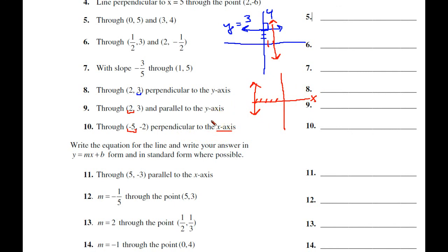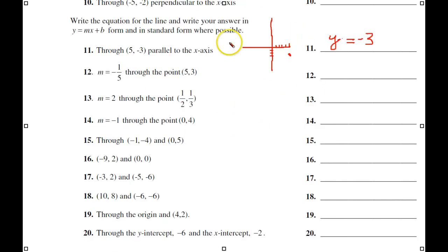Okay, let's raise it up. Another way to look at this, if you're not sure, we're going to plot 5, negative 3. So, there's 5. There's negative 3. Now, we want a line that goes through that point, but it's parallel to the x-axis. So, that line is going to look like so. What's the equation of that line? Y equals negative 3. It's a horizontal line.